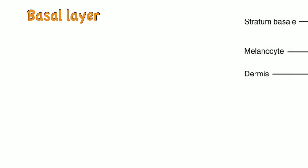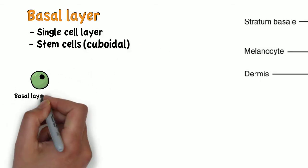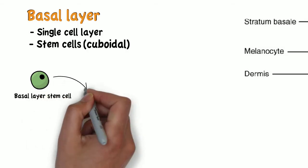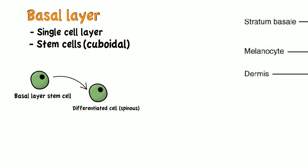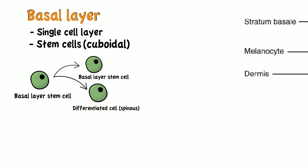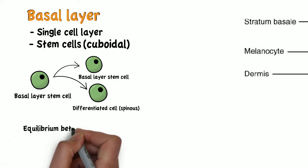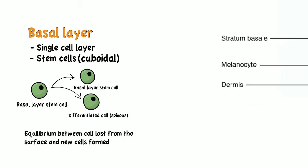The basal layer is a single cell layer that contains the stem cells of the epidermis, and these cells are cuboidal in shape. Newly formed daughter cells will either differentiate to form the spinous layer above, or remain in the basal layer as stem cells. Cell division is finely controlled to maintain an equilibrium between cells lost from the surface and new cells formed.